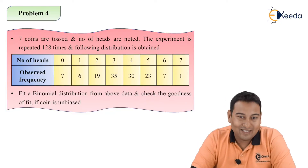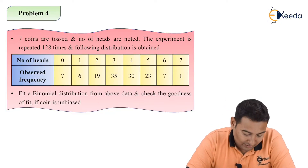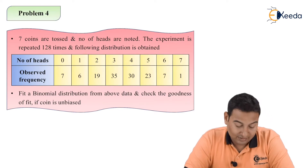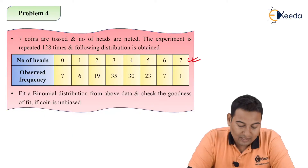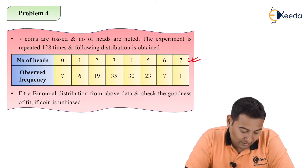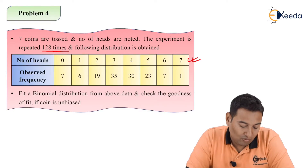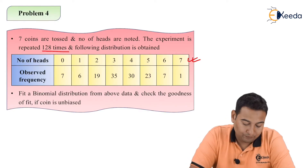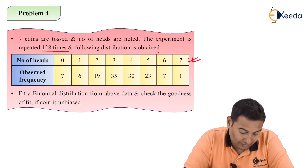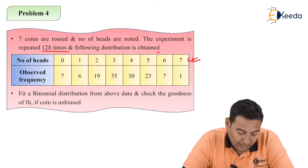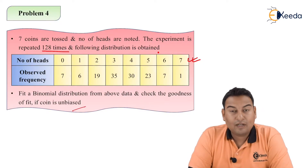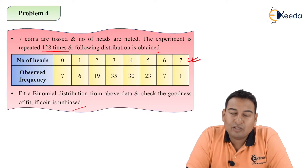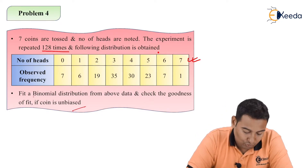Now we'll see this particular problem: seven coins are tossed and the number of heads are noted. The experiment is repeated 128 times and the following distribution is obtained. We need to fit a binomial distribution from the above data and check goodness of fit, given that the coin is unbiased.